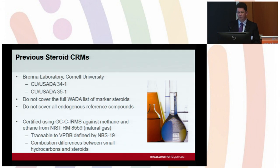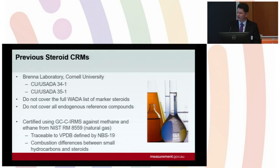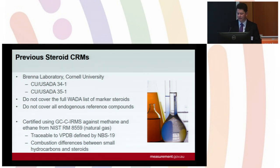NMIA is not the first group to produce steroid CRMs. They originally came out of Professor Tom Brennan's laboratory from Cornell University. The two most relevant products are the USADA 34 and 35 materials, which don't cover the full list of marker steroids specified by WADA nor the full list of endogenous reference compounds. These materials were certified by GC combustion IRMS against a methane and ethane natural gas reference material, only traceable to NBS19, not the current NBS19/L-SVEC scale. There are also combustion and chromatographic differences between the light hydrocarbons and the steroids, which give us scope to produce a material of higher order.